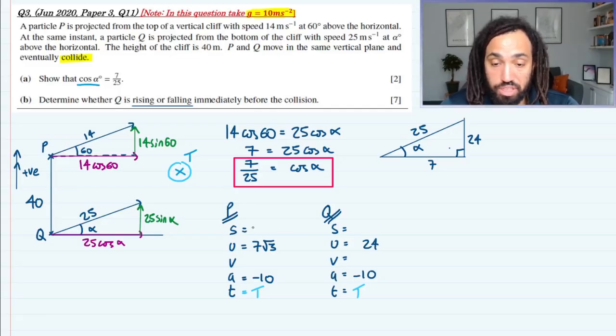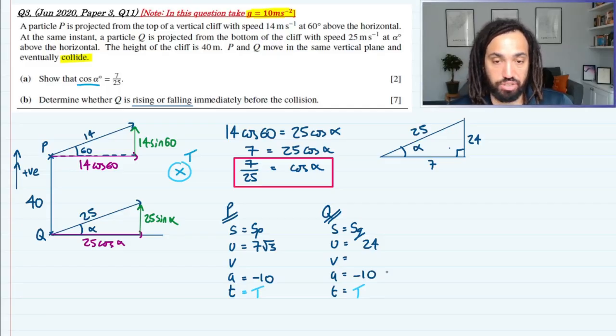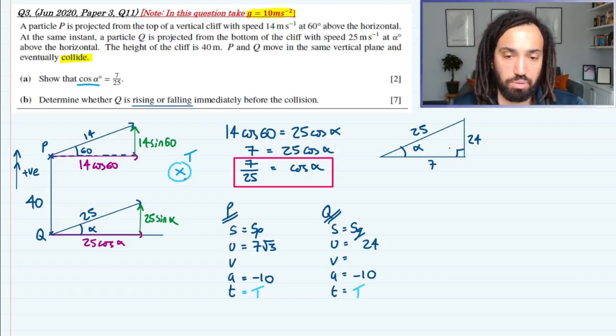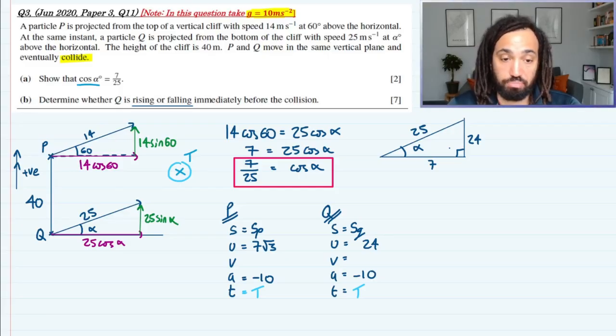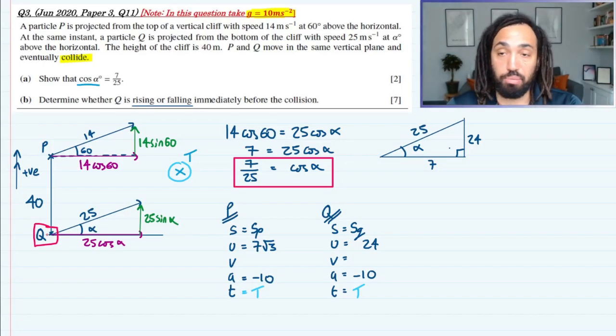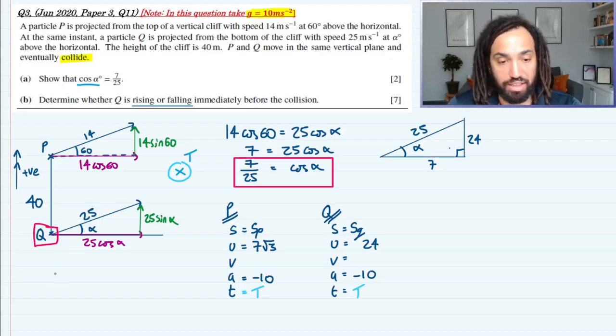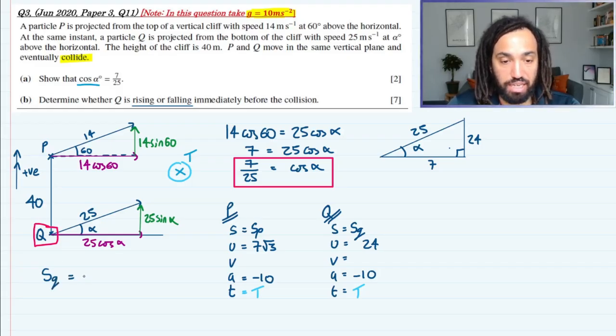Now what we can do is we can call the displacement for P, SP, and the displacement for Q, SQ. Now what we need is a way of linking these two equations, and that is the fact that they meet here. So let's think about what their displacements must equal if they are going to meet. Basically, Q needs to move 40 meters upwards relative to P in order for them to meet. So we could say that SQ needs to be SP plus 40 for them to meet.